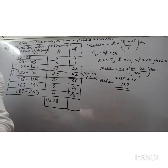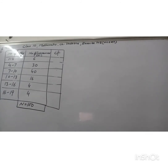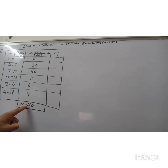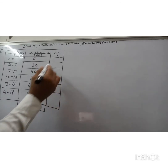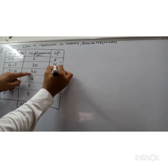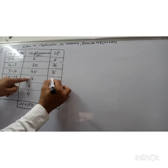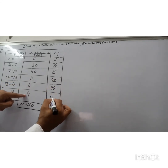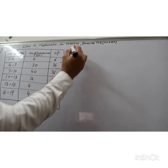Now let us find the median for a second problem. The class intervals are 1–4 with frequency 6, 4–7 with frequency 30, 7–10 with frequency 40, and so on up to 16–19 with frequency 4. Total n = 100. The cumulative frequencies are: 6, 36, 76, 92, 96, 100. The last cumulative frequency must equal n = 100.